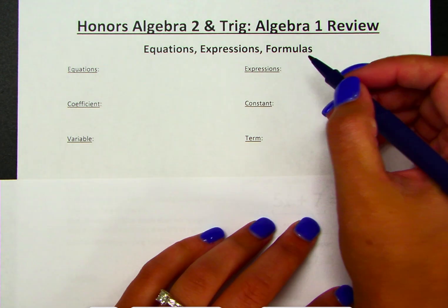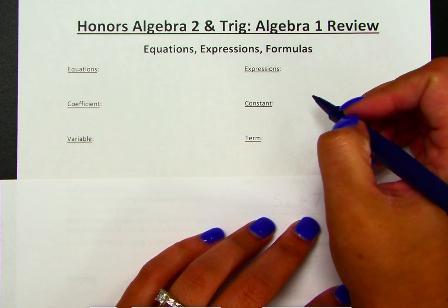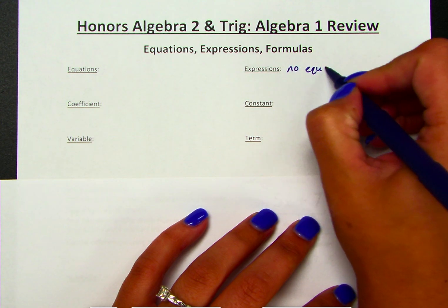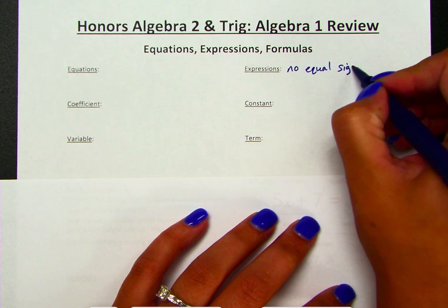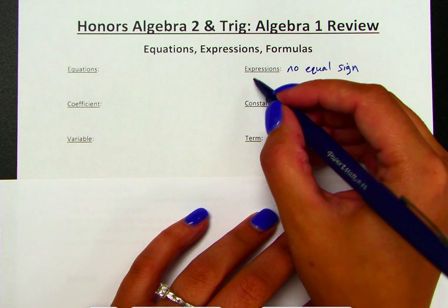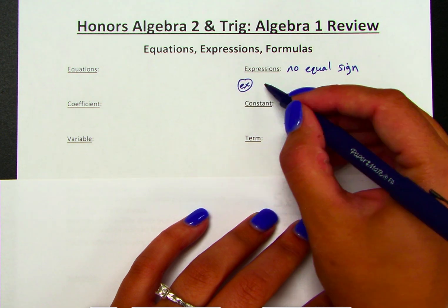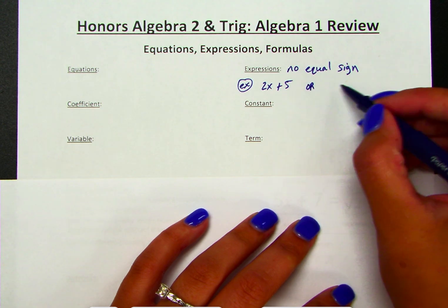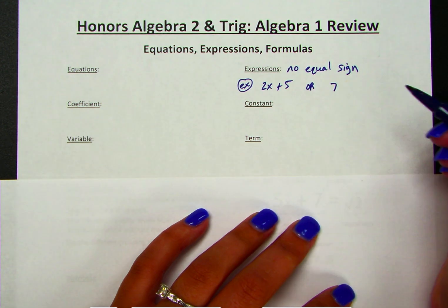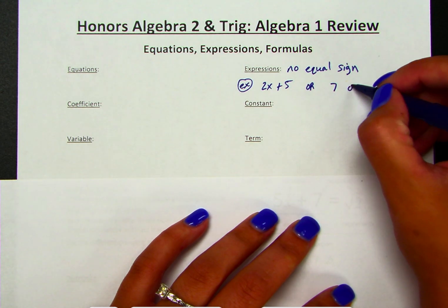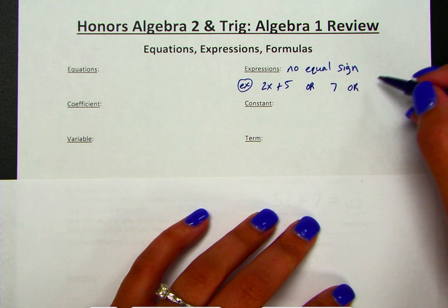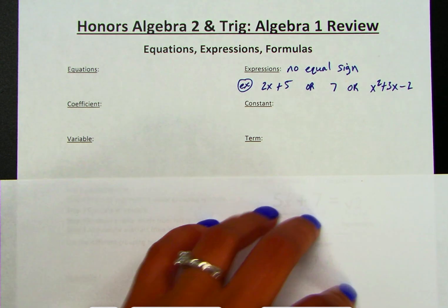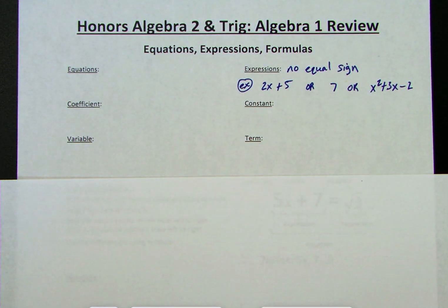Starting with an expression — this is something with no equal sign. It's going to have numbers and letters, so it could be something like 2x plus 5, or it could simply just be a number like 7, or it could be even more complicated: x squared plus 3x minus 2. Those are all examples of expressions.